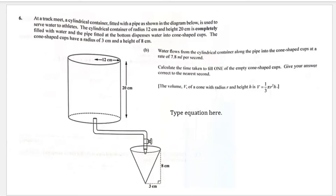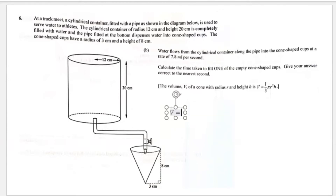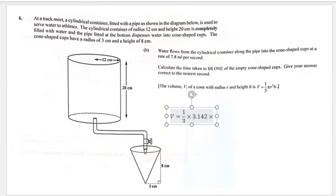Part b says: water flows from the cylindrical container along the pipe into the cone-shaped cups at a rate of 7.8 milliliters per second. Calculate the time taken to fill one of the empty cone-shaped cups, correct to the nearest second. The formula for the volume of a cone is V = ⅓ π r² h. Using π = 3.142, radius = 3 cm.